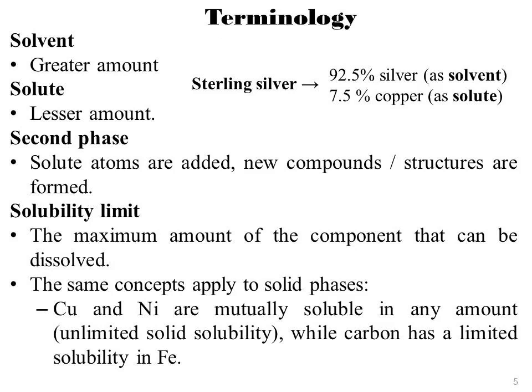Terminology involved in this topic. First, solvent. In an alloy, the element or compound present in the greater amount is the solvent. For example, sterling silver, which is composed of 92.5% silver and 7.5% copper — silver is the solvent.